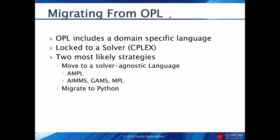Let's talk about migrating from OPL. OPL includes a domain-specific language locked to the CPLEX solver. There are two main strategies: you can move to one of the solver-agnostic languages like AMPL, AIMMS, GAMS, or MPL, or what I'm going to suggest — migrating to Python. Python gives you the best of both worlds: it's as powerful as a general-purpose programming language, because it is one, and it's as effective as a domain-specific language in modeling math programs.